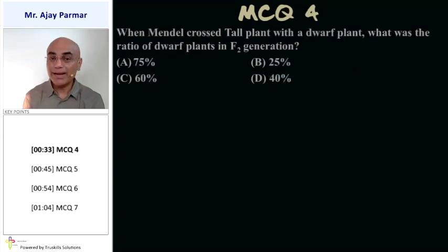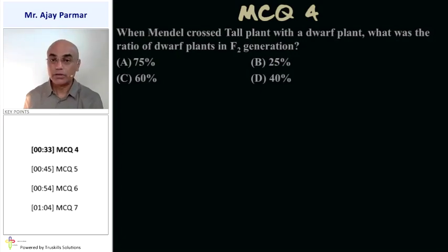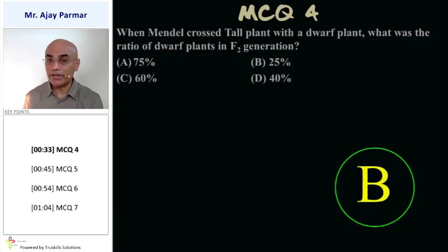When Mendel crossed tall plants with dwarf plants, what was the ratio of dwarf plants in the F2 generation? That was 25 percent, option B.